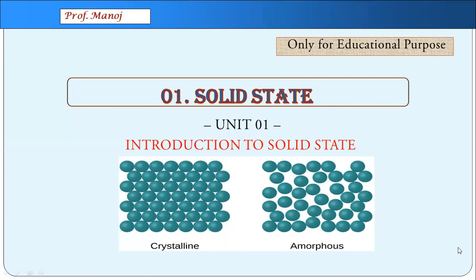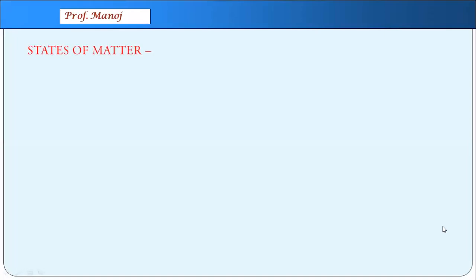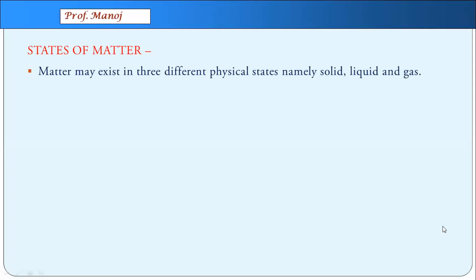The first chapter of your syllabus is solid state. We had seen the gaseous state in the 11th standard course where we covered Boyle's law, Charles' law and other things. This is the second state we are going to study, that is solid state. There are around five units in this topic. The first unit is going to be the easiest, where most things you already know. From the second unit onwards you will have totally new things to study.